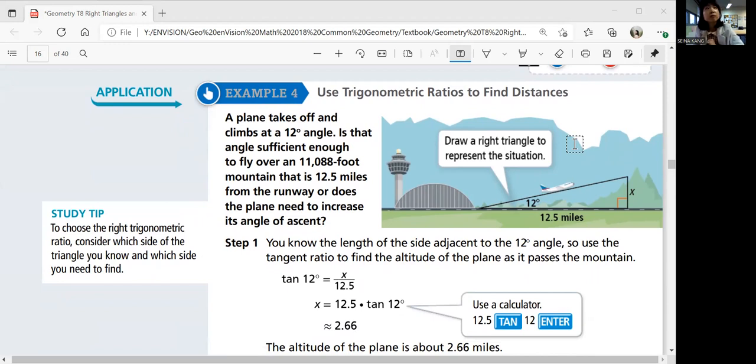Okay, we're going to draw a triangle to represent the situation and we're going to figure out the x and see if we can answer this question. It has a 12 degree angle, climbing at 12 degrees. Is it sufficient to fly over an 11,088 foot mountain?